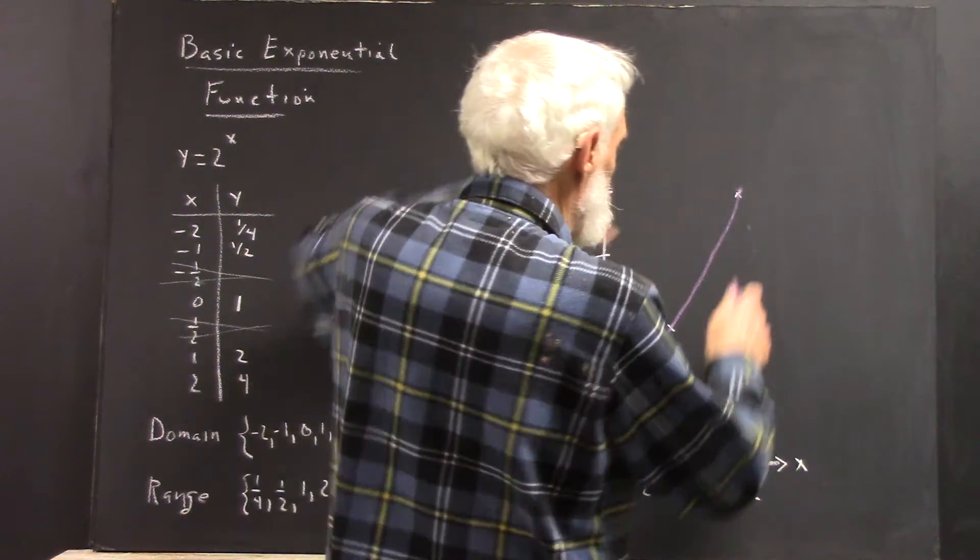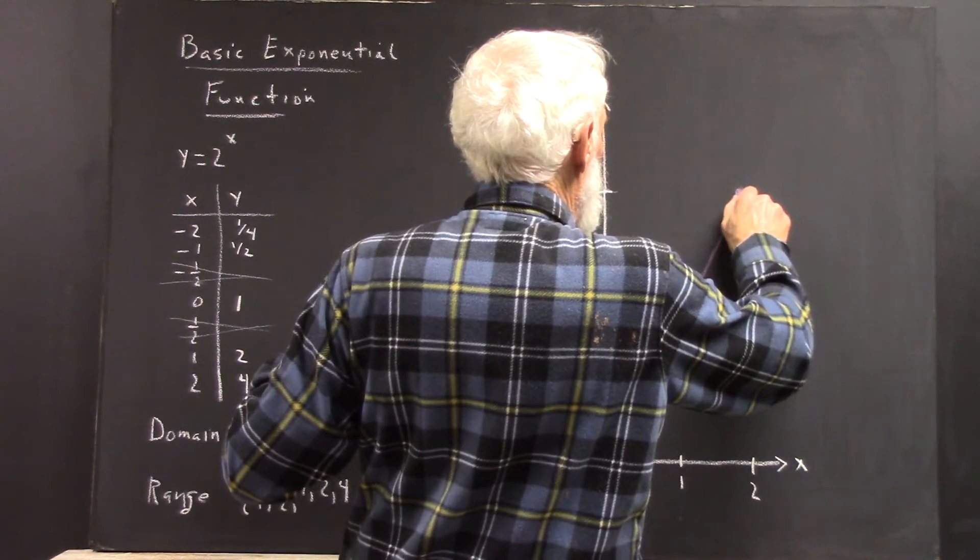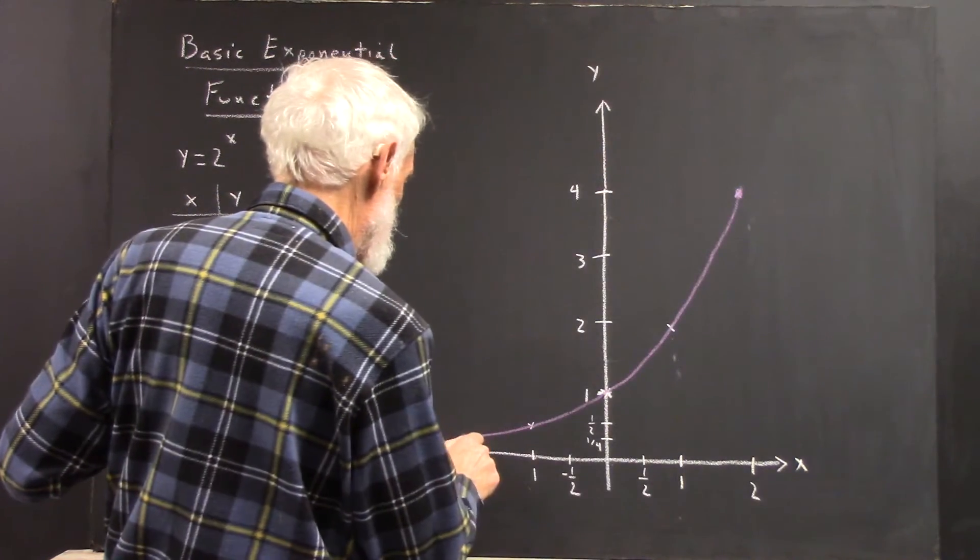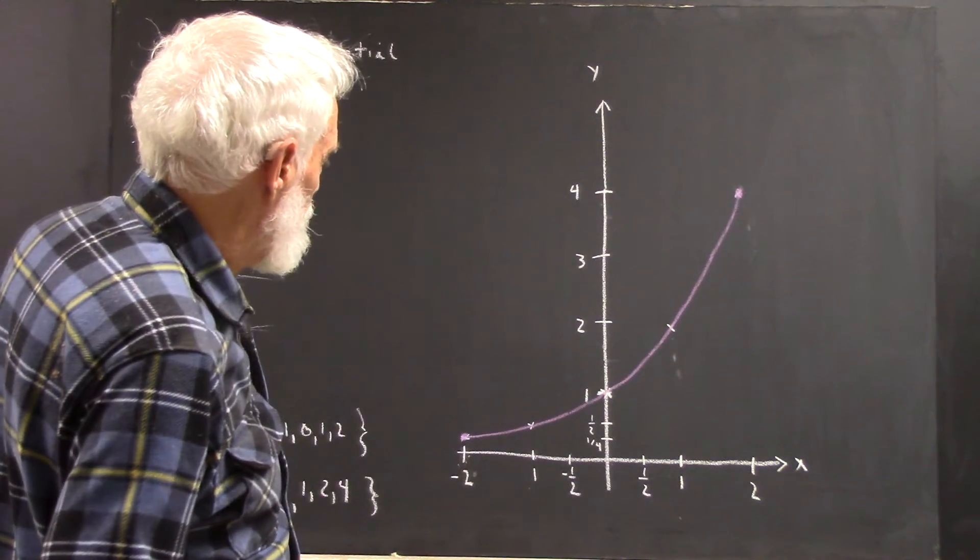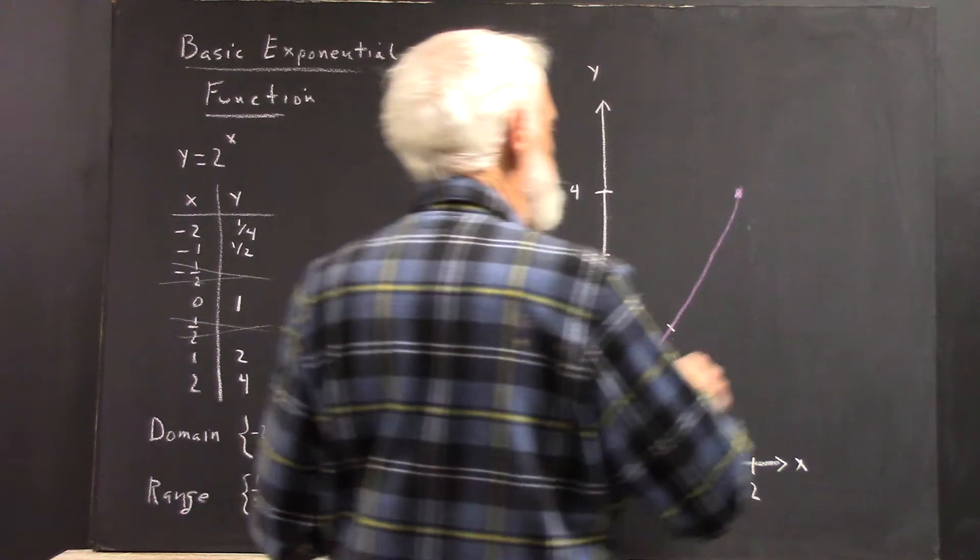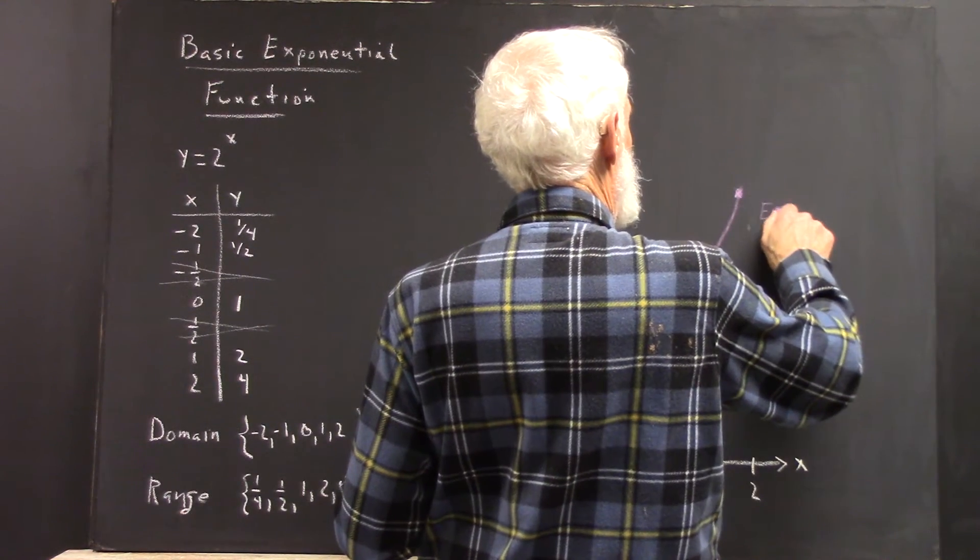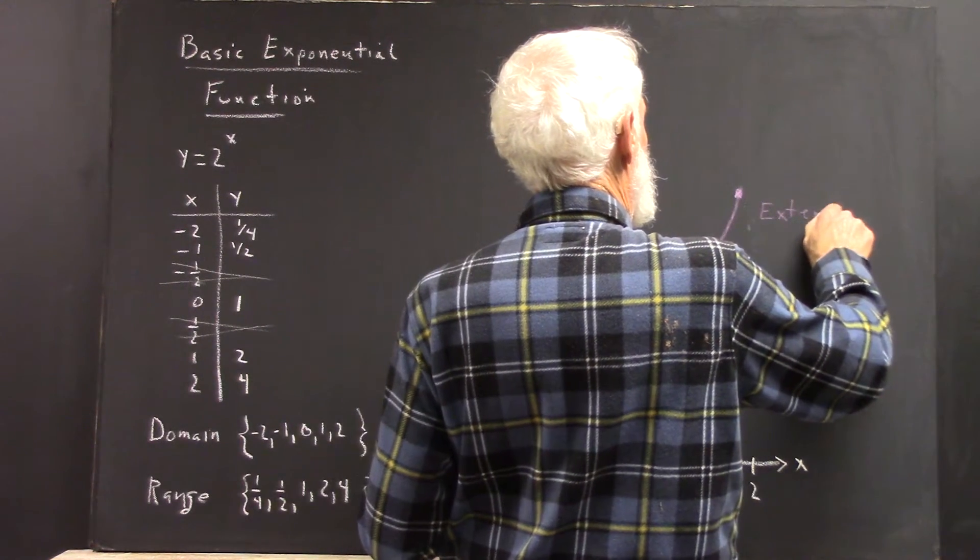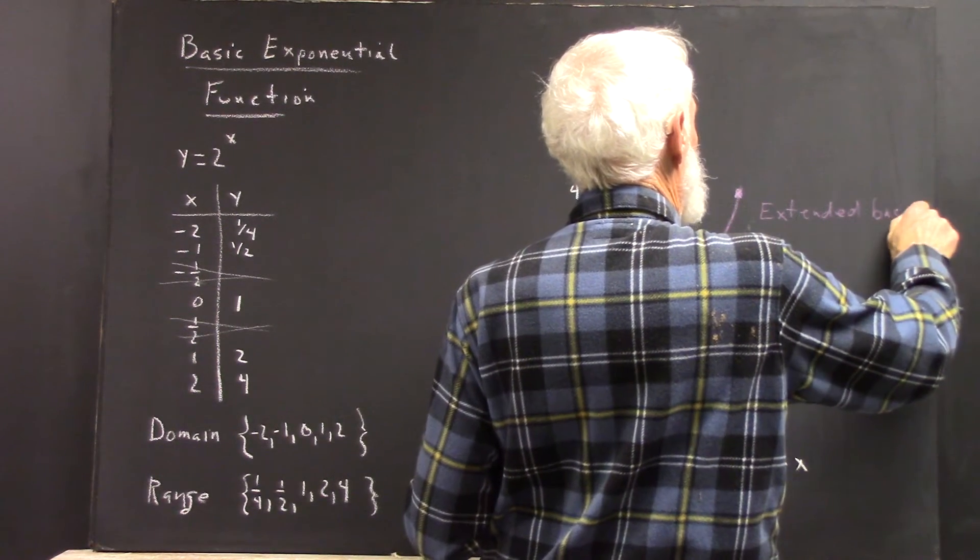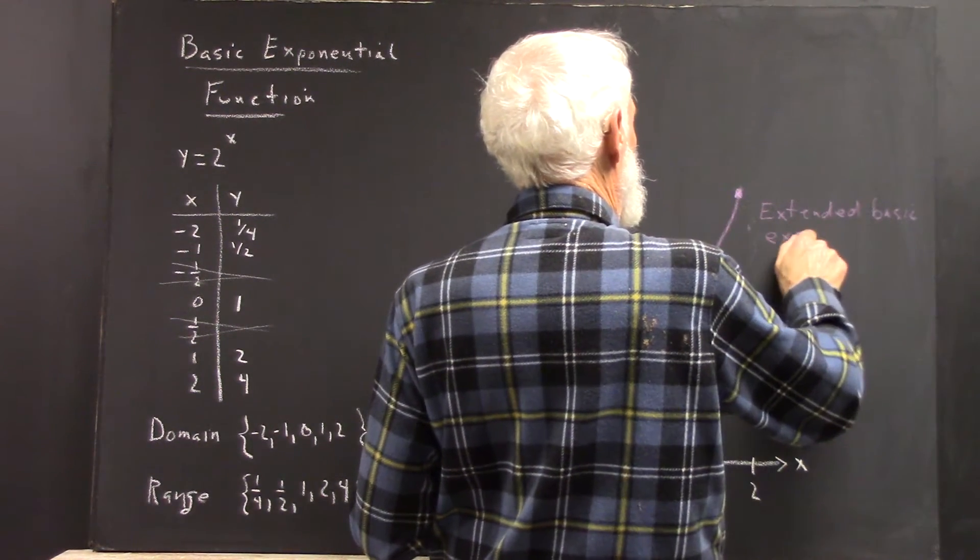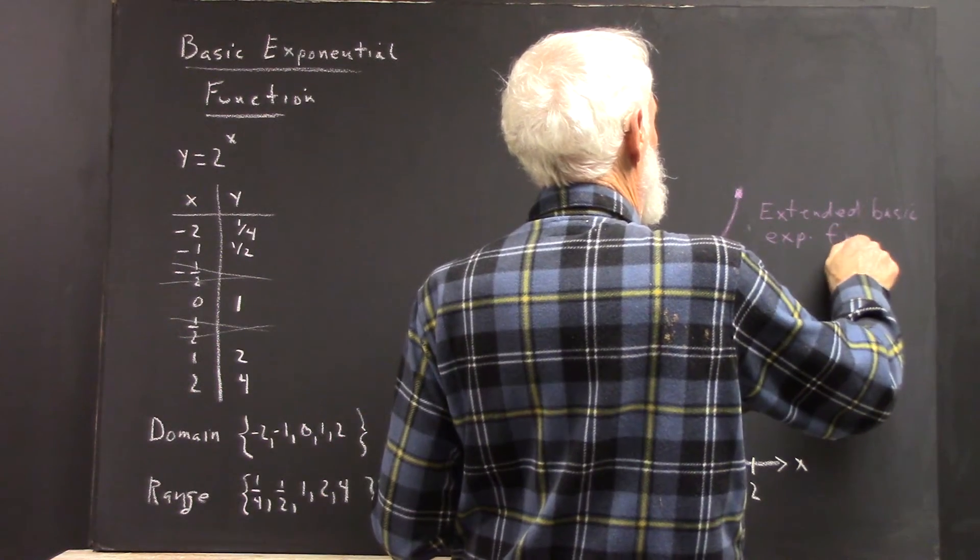And we don't go beyond the point for the extended function. There's the end of it. Go left to right. There's the beginning. This is the extended basic exponential function.